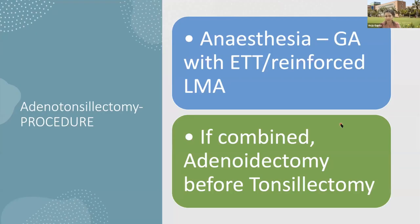The anesthetic procedure can be either GETA — general anesthesia with endotracheal intubation — or we can also use a reinforced LMA. Some have reported series using reinforced LMA which protects the airway, provides optimal operating conditions, and is not susceptible to kinking. If combined adenotonsillectomy is planned, adenoidectomy is done before tonsillectomy.